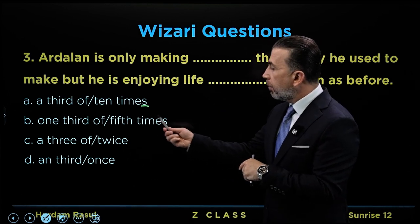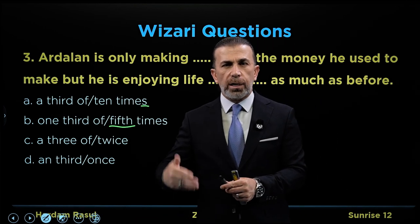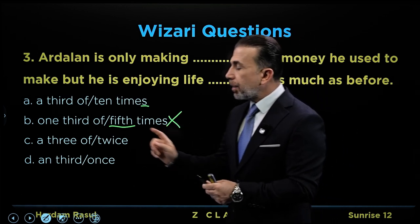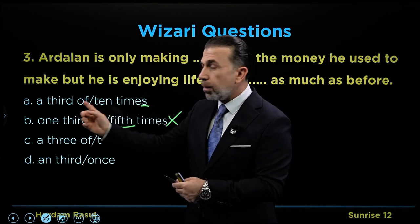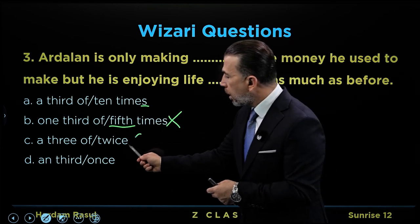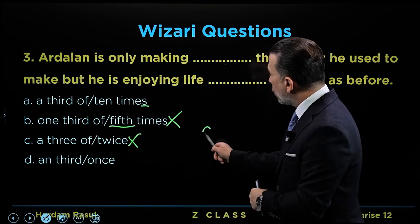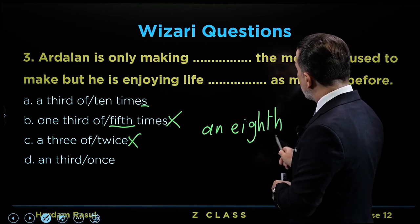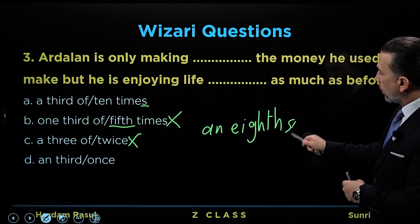Fifth times — first, second, third — those are ordinal number forms with 'times'. Do not confuse the meaning of 'a third of' versus 'a three of' — 'a third of' means one third. An eighth — how does it end? An eighth. An eighth — is it clear now? An eighth.